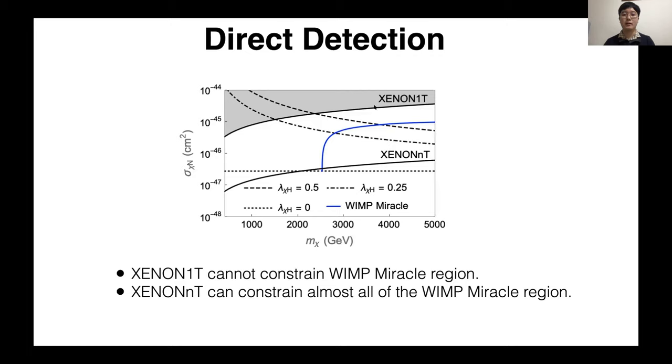XENON1T and XENONnT are most stringent at present and in the near future. The solid line corresponds to the constraint from XENON1T and XENONnT. The region above the line is excluded. And the dotted line corresponds from top to lambda_chi_h is 0.5, 0.25, and lambda_chi_h is 0. And on the blue line, lambda_chi_h is adjusted so that WIMP miracle occurs. In other words, on this line, thermal relic of real scalar triplet can explain observed dark matter density. From this figure, we can find that XENON1T cannot constrain WIMP miracle region. However, XENONnT can constrain almost all of the WIMP miracle region, except for this tiny region.